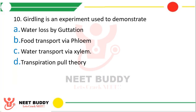Question 10: Girdling is an experiment used to demonstrate — option A: loss of water by guttation, option B: transport of food via phloem, option C: water transport via xylem, option D: transpiration pull theory. The correct answer is option B, food transport via phloem.